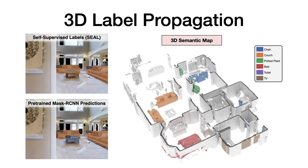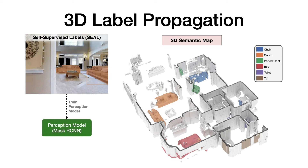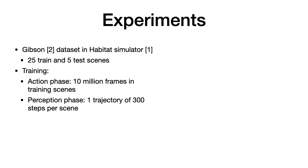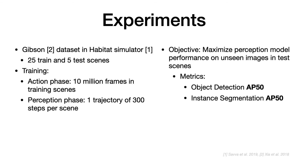And here we see another example of the pre-trained Mask R-CNN incorrectly detecting a chair, but the self-supervised labels obtained using SEAL are correct. The set of observations in the trajectory and the corresponding labels obtained using self-supervised 3D label propagation are then used to fine-tune the pre-trained Mask R-CNN. We use the Gibson dataset with the Habitat simulator for experiments, consisting of 25 training and 5 test scenes. We train the exploration policy for 10 million frames and fine-tune the perception model on data collected by this policy for one trajectory per scene. Our objective is to maximize object detection and instance segmentation performance on unseen images in the test scene.